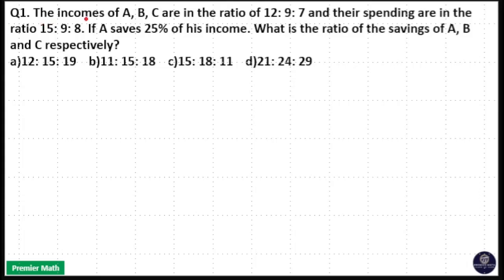The income of A, B, C are in the ratio of 12 is to 9 is to 7, and their spendings are in the ratio 15 is to 9 is to 8. If A saves 25 percentage of his income, what is the ratio of savings of A, B, C respectively?